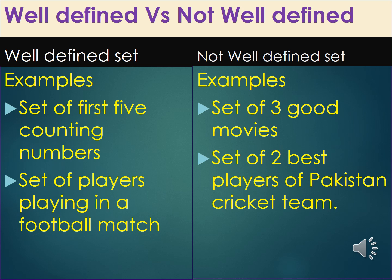Now look at not well-defined sets. The set of 3 good movies, as mentioned earlier, varies from person to person. Also, the set of the 2 best players of the Pakistan cricket team is a person's choice — whether Waqar Younis, Saeed Anwar, Inzamam-ul-Haq, Shahid Afridi, or someone else. So these are not well-defined sets.